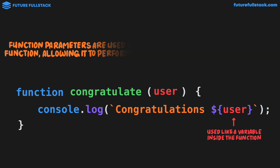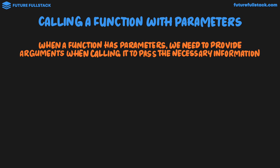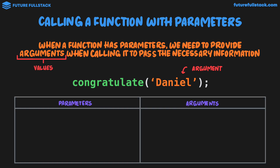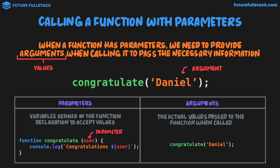Let's now discuss calling a function with parameters. When a function has parameters, we need to provide arguments when calling it to pass the necessary information. Arguments are the actual values we're passing to the function. So when I call the congratulate function, I'm passing it an argument — in this case, the string 'Daniel'. Parameters are variables defined in the function declaration to accept values; they're general in nature. Arguments, on the other hand, are the actual values passed to the function when called — so 'Daniel' is an argument, a real-life value which will be used inside the function.